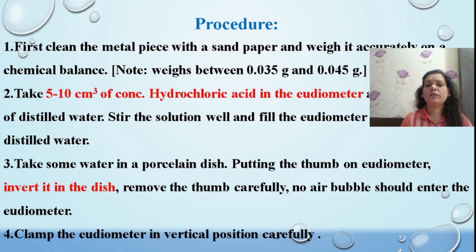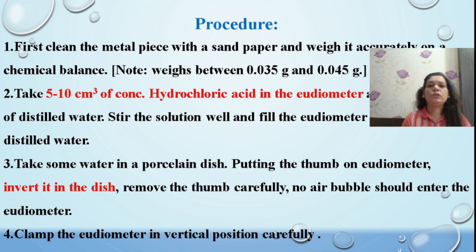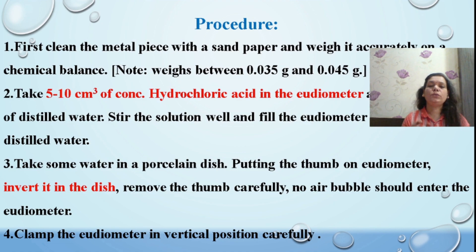We are going to use magnesium metal. If kept for a long time in a lab, it produces magnesium oxide on the surface, so you must polish the surface with sandpaper to make it active. Then weigh the polished magnesium in the range of 0.035 to 0.045 grams using a digital balance, and note down this weight in your notebook.